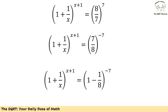To solve this problem, I am going to rewrite the equation a little bit differently. We have (1 + 1/x)^(x+1) = (8/7)^7. I am going to write (8/7)^7 as (7/8)^(-7).